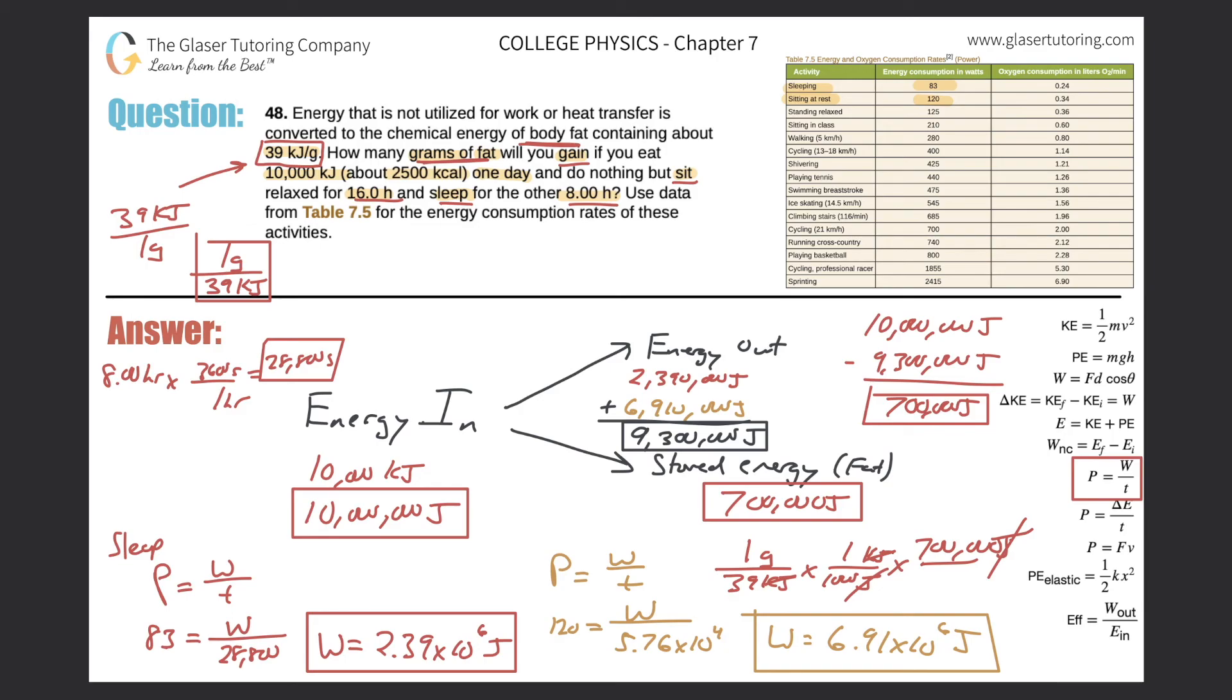So 700,000 divided by 39 times 1,000, and we get about 17.9 grams. And that would be the final answer, because they wanted it in terms of grams. So guys, thank you so much for tuning in. Please remember to subscribe. And always keep this in mind, don't consume too much energy, just consume just enough energy. Thank you so much. Take care.